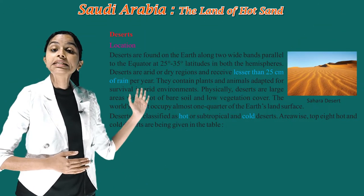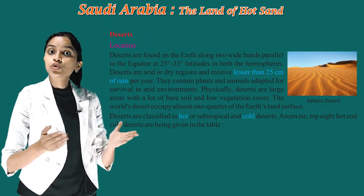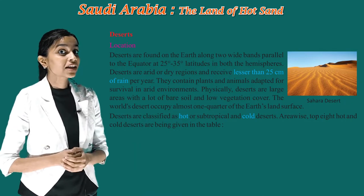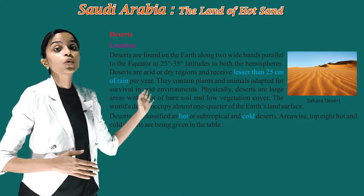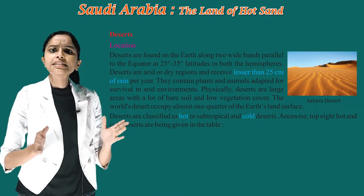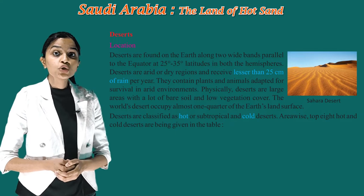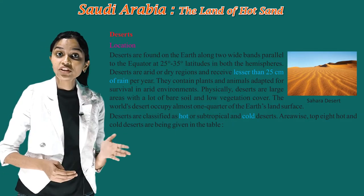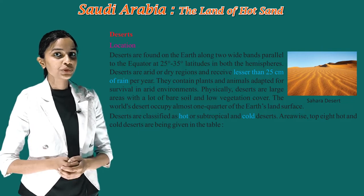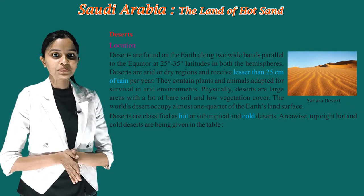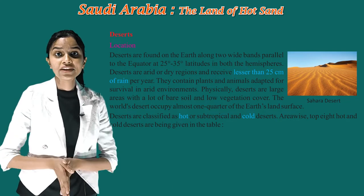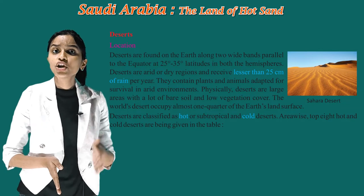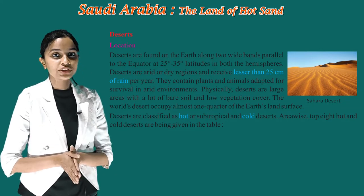Now have a look at the deserts of Saudi Arabia. Deserts are found on the earth along two white bands parallel to the equator, at 25 to 35 degree latitudes in both hemispheres. Deserts are arid or dry regions and receive lesser than 25 centimeters of rain per year.